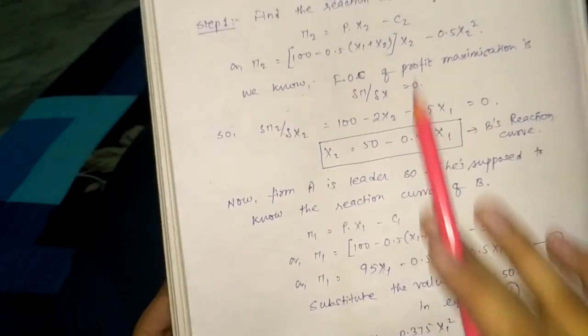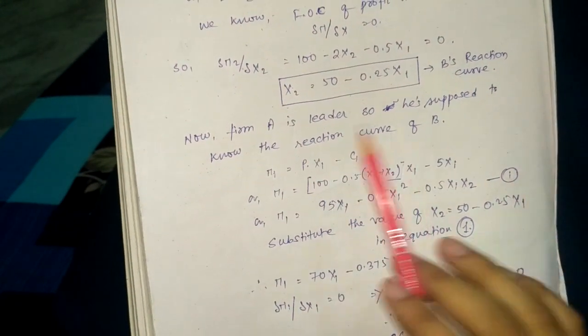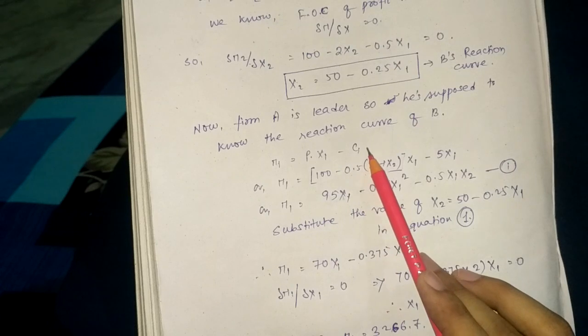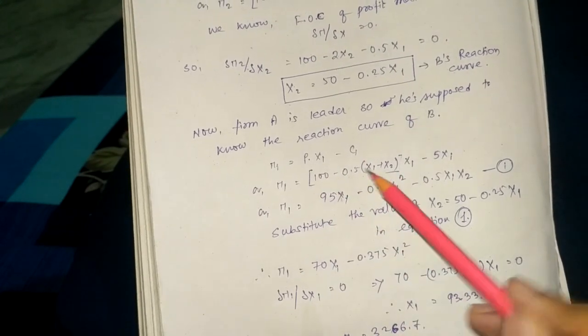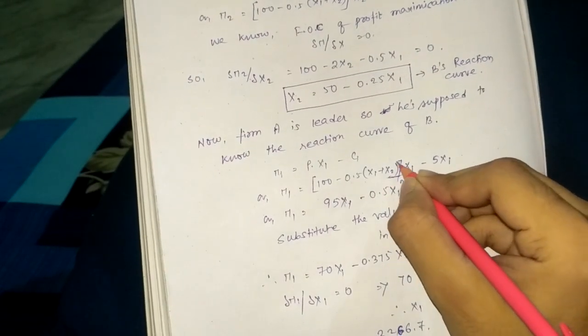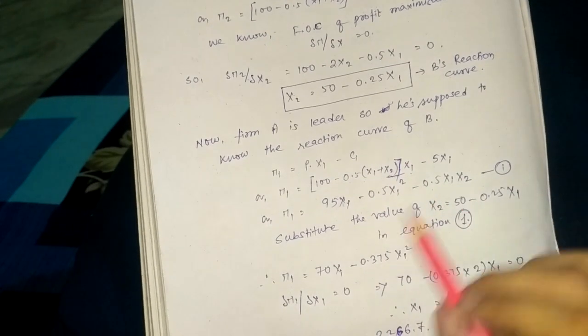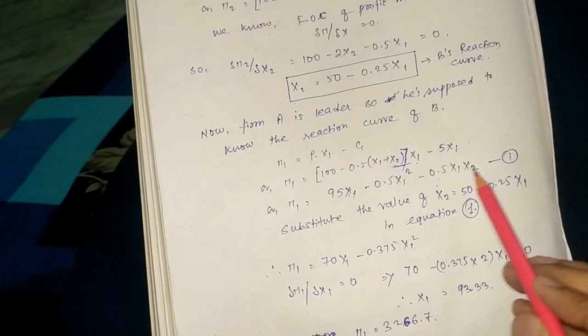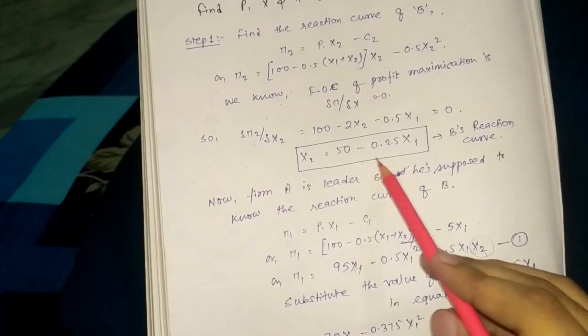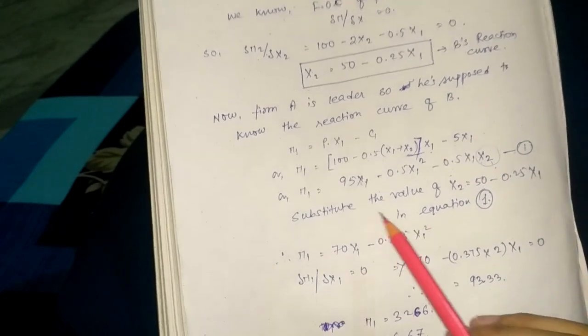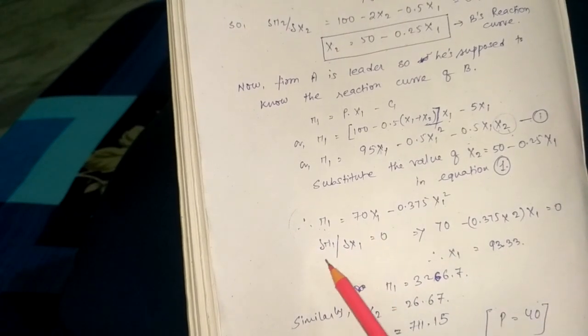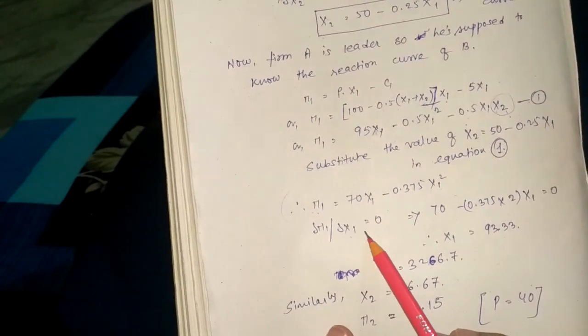Now firm A wants to be leader, so he's supposed to know the reaction curve of B. Profit for firm 1 should be P into X1 minus C1, and we know the value of P. Opening the bracket we have this equation, and now we substitute the value of X2, the reaction curve of firm B, into this equation. By substituting the value we arrive at the value of pi 1 and apply the similar first order condition for profit maximization for firm 1.